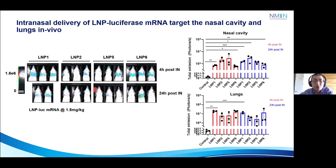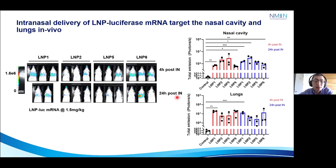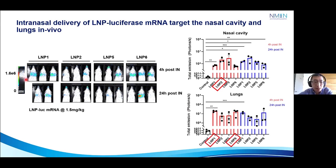What about intranasal delivery? Can LNPs enter the nasal cavity and the rest of the lung structures? Based on these images, yes, they can — but to different extents. The y-axis represents the total emission signal of luciferase in the nasal cavity versus the lung structures, at 4 hours versus 24 hours post intranasal delivery. Mice were anesthetized and allowed to inhale 50 microliters of LNPs. For the nasal cavity, LNP-2 seems to be the winner. For the lung structures, LNP formulations 1 and 6 appear to be the better formulations, fairly consistent throughout the 24-hour time point.